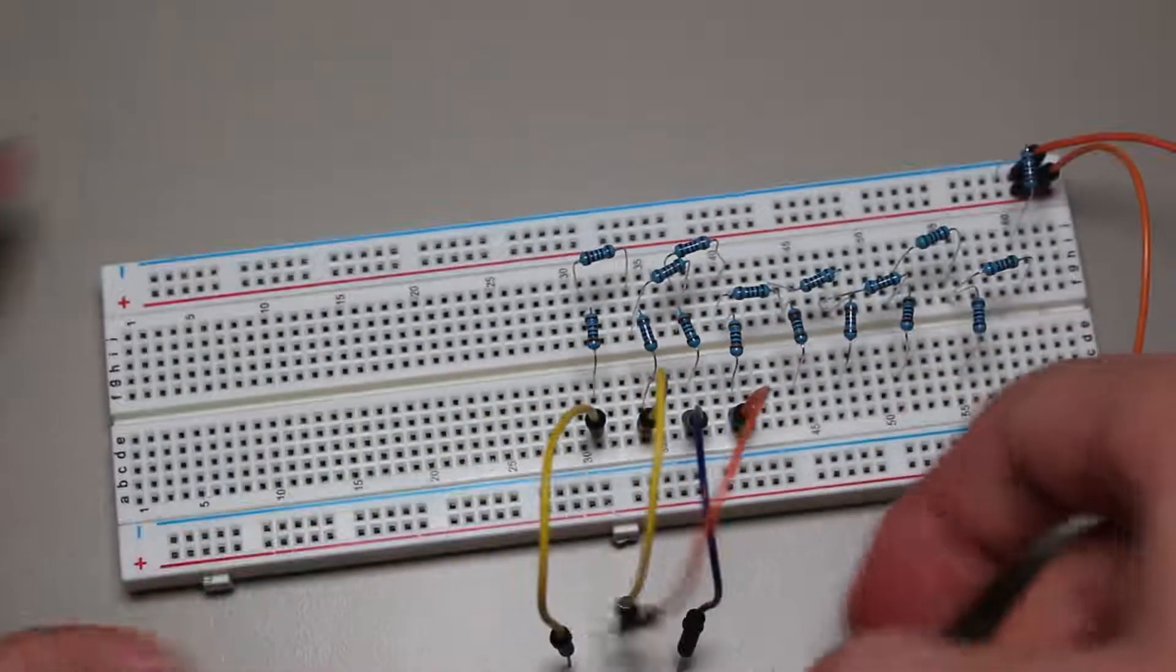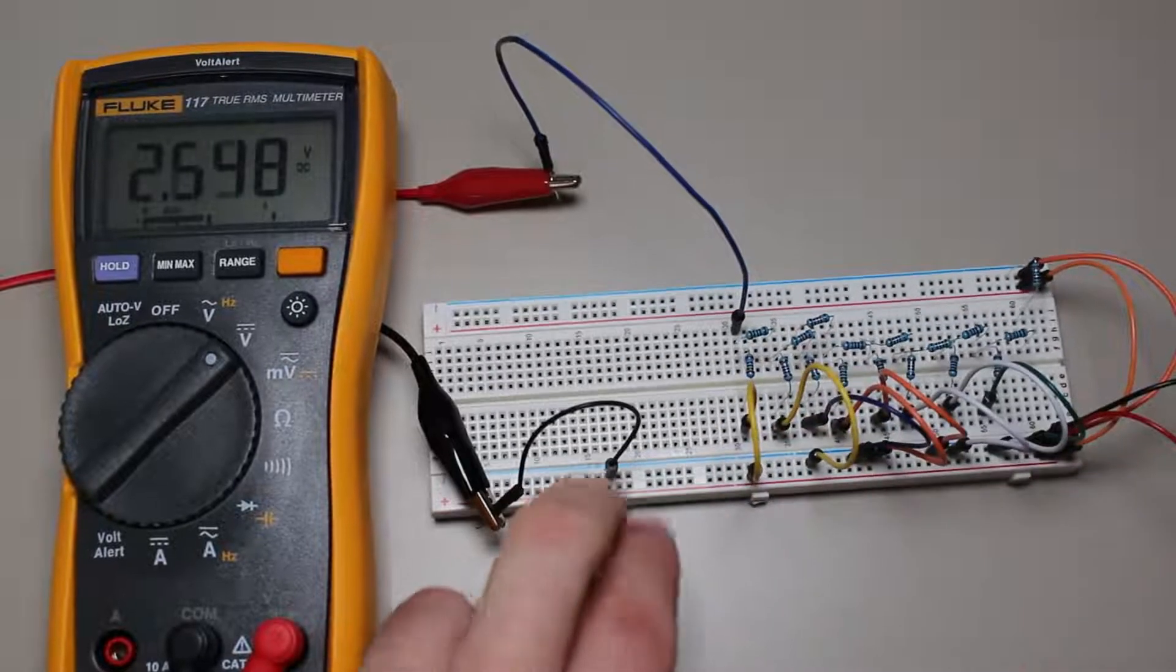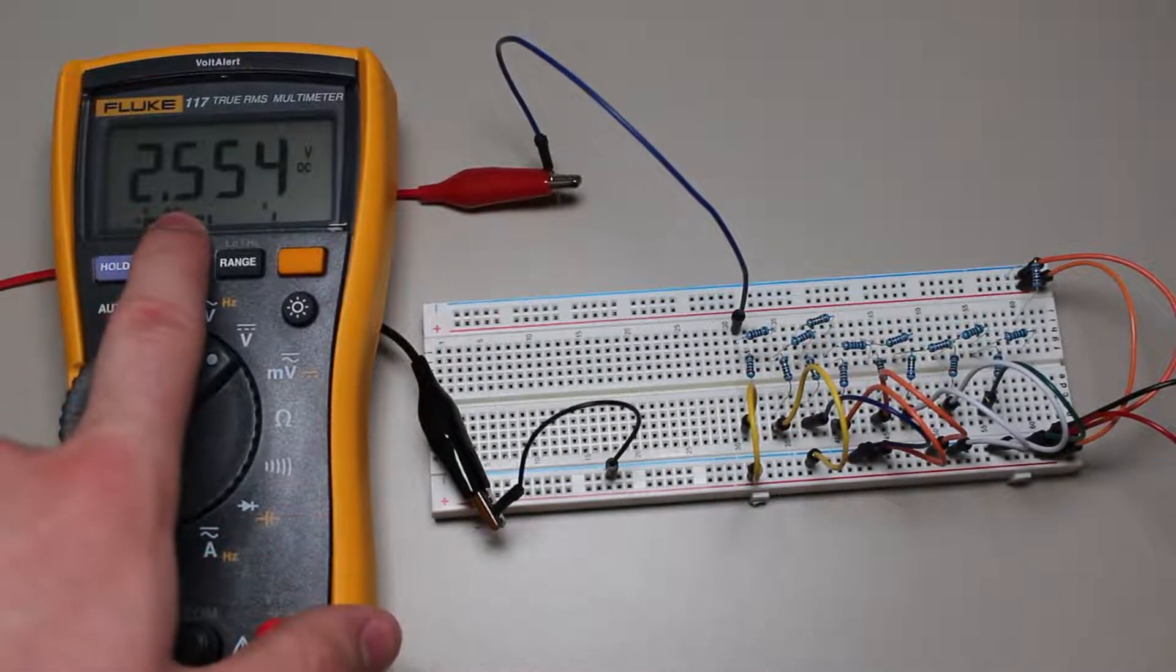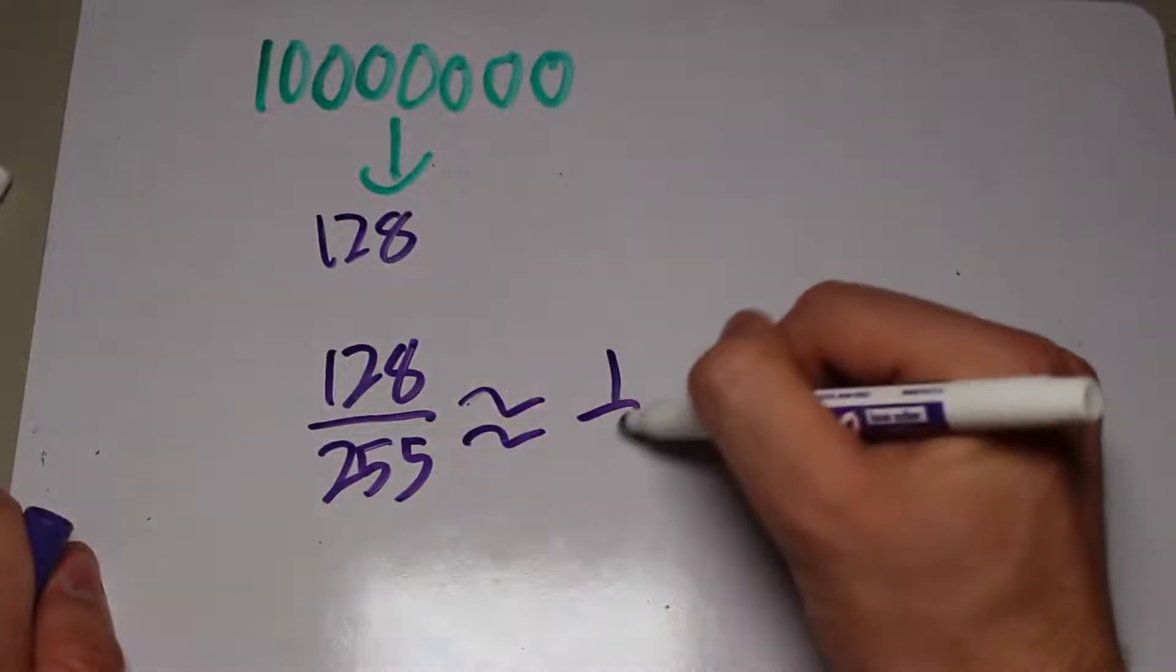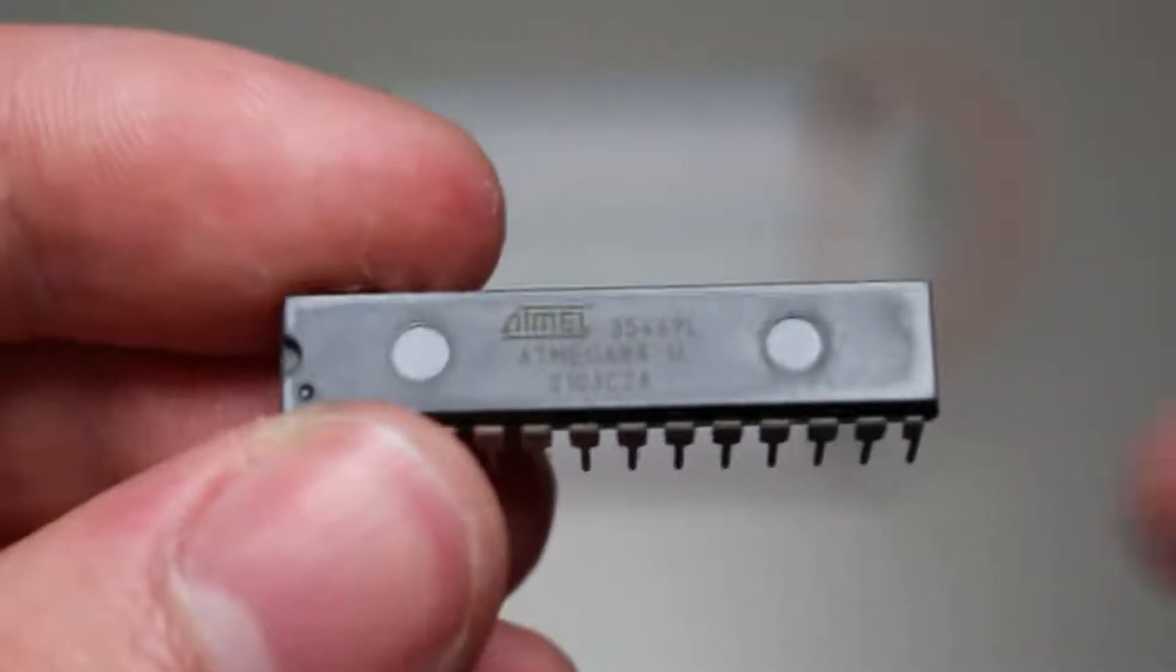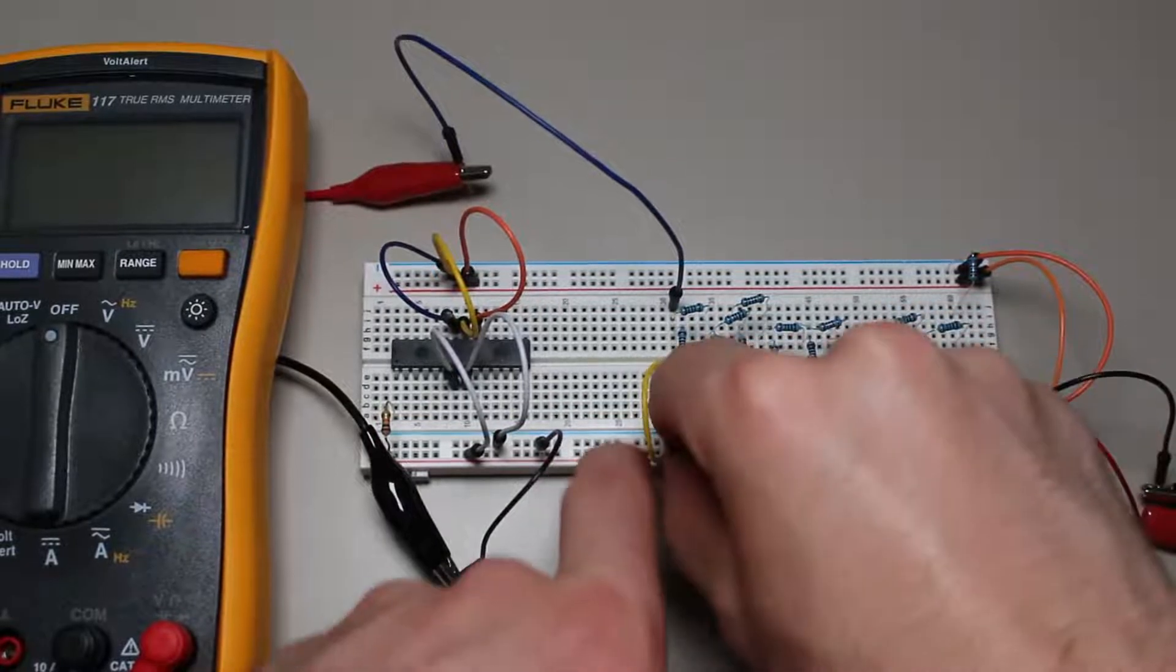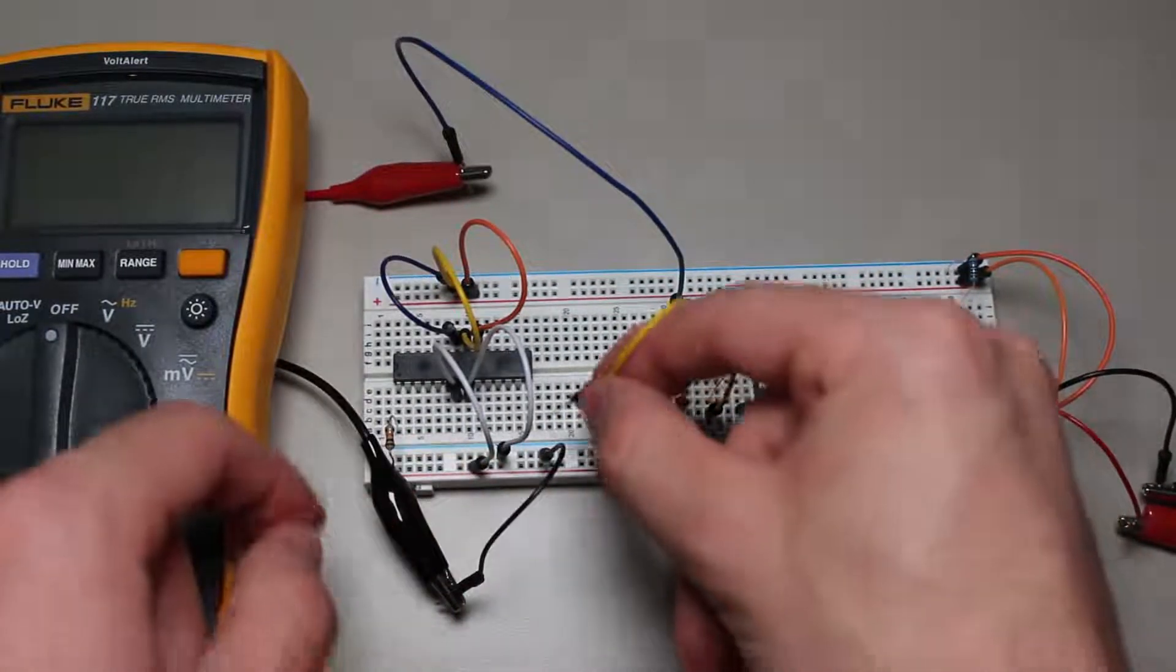Anyways, running a quick manual test, we can see that inputting 128, which is about half of 255, gives us a voltage that is close to half of 5 volts. Anyways, let's connect the DAC to port D on the ATmega88 microcontroller. Now we can conveniently write numbers to the code and control the exact output of the DAC instead of manually changing it.